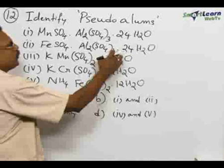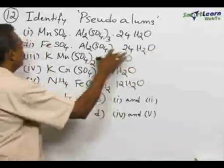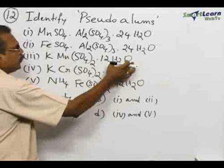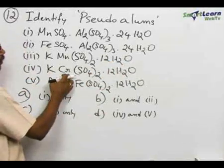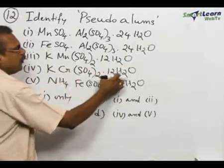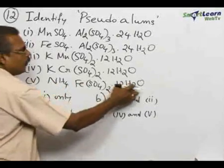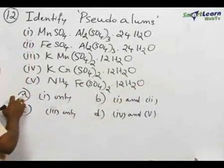FeSO4, Al2(SO4)3, 24H2O, K Mn(SO4)2, 12H2O, K Cr(SO4)2, 12H2O, NH4 Fe(SO4)2, 12H2O and options given are A,